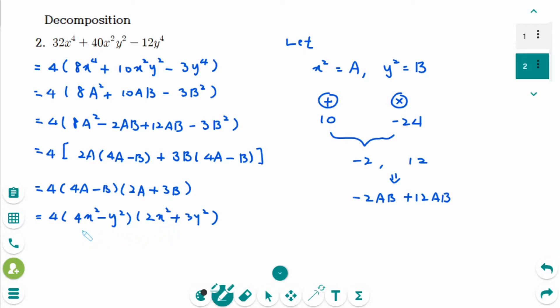Because 4x squared minus y squared is the difference of squares. So 2x plus y, 2x minus y, and then keep the last one. This is the final answer.